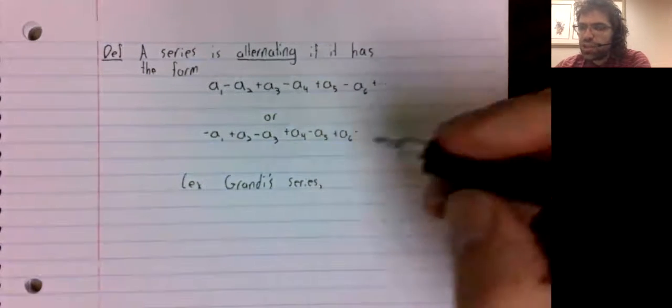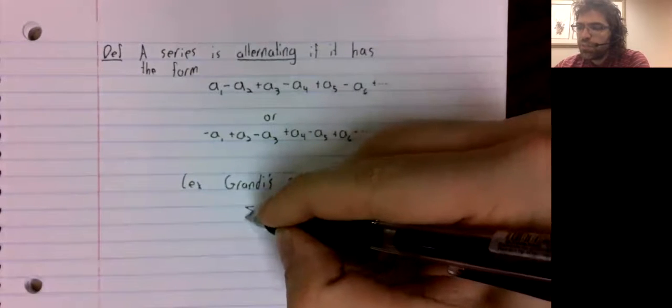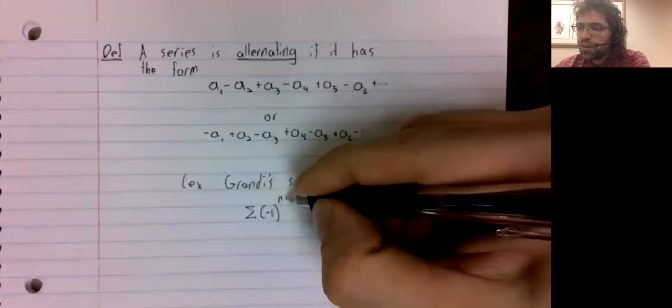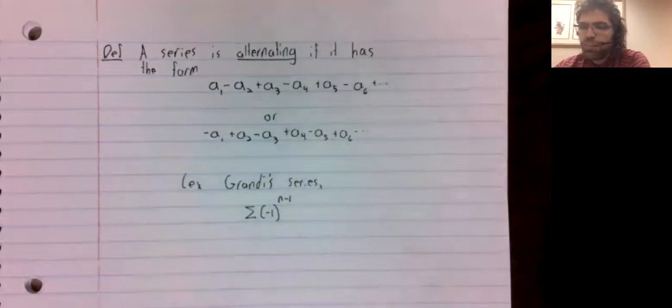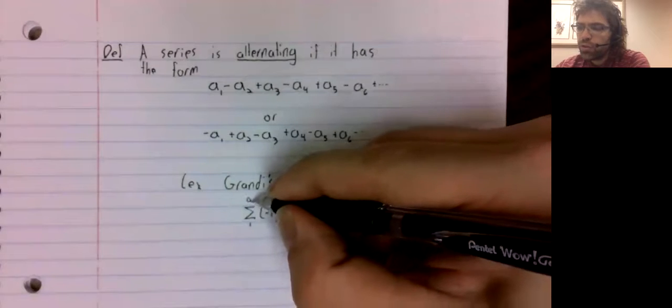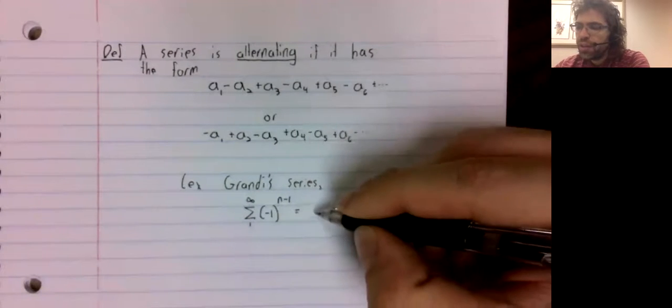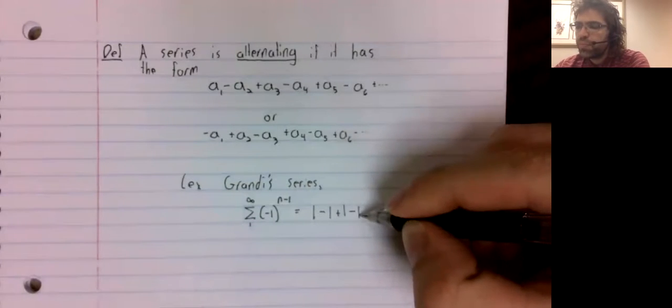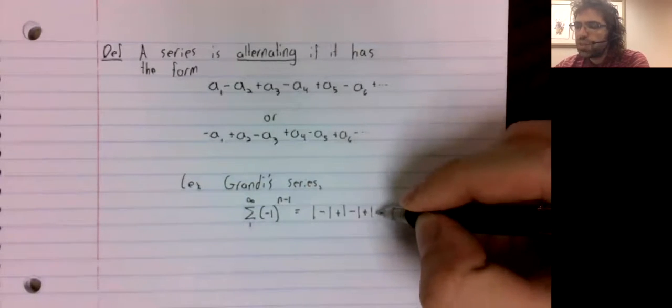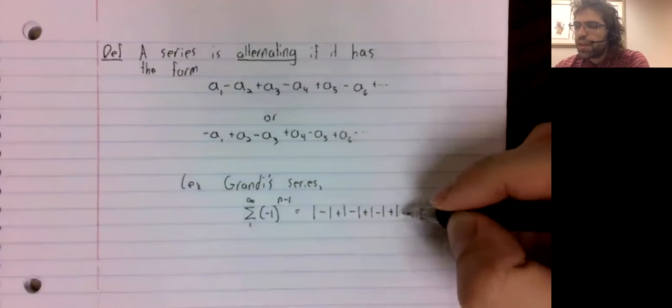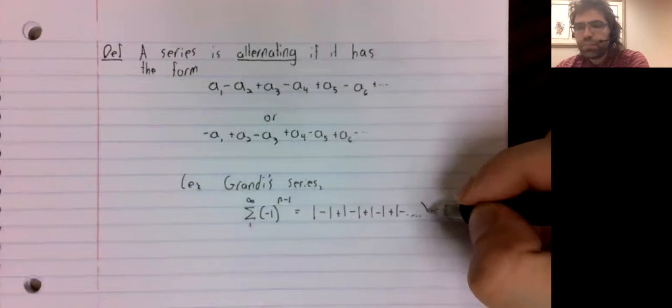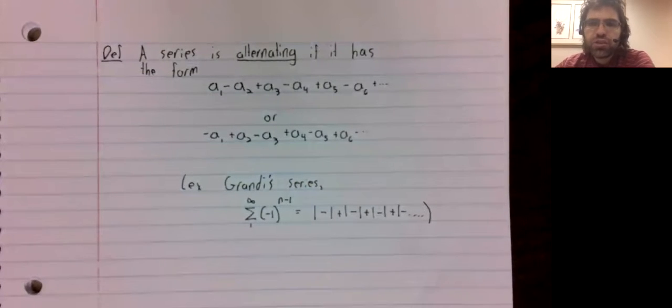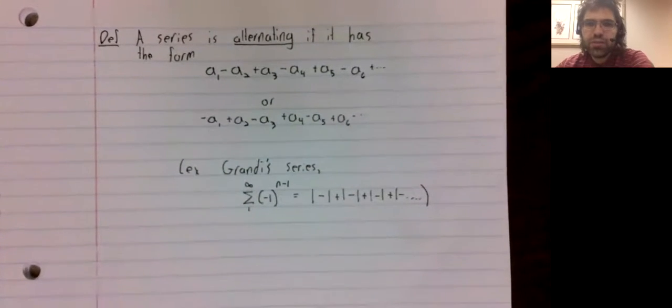Grandy's series: the sum of (-1)^(n-1) from 1 to infinity. The terms alternate between positive and negative. Grandy series is a divergent alternating series.